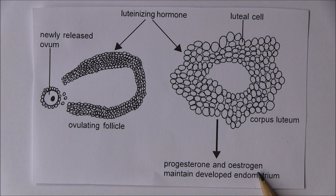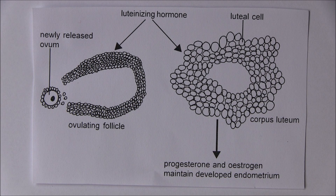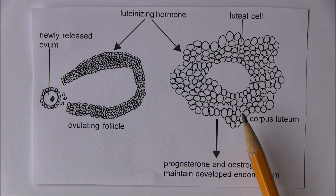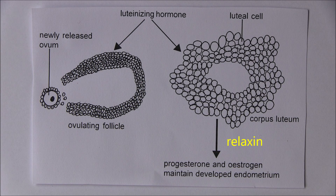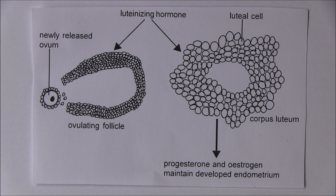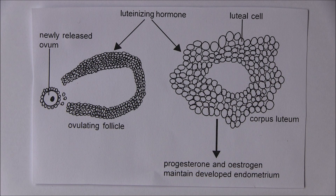Progesterone is important for the formation of the ductal structure and milk-secreting cells in the breasts. It also maintains the development of the endometrium during the second half of the menstrual cycle. Additionally, the corpus luteal cells produce another hormone called relaxin, which inhibits contractions of the uterus. This is important because if fertilization occurs, uterine contractions could cause early miscarriage or rejection of the fertilized zygote and failure of implantation into the developed endometrium.